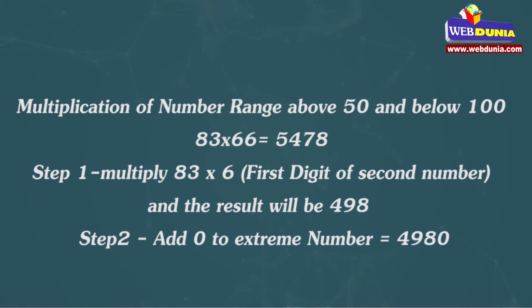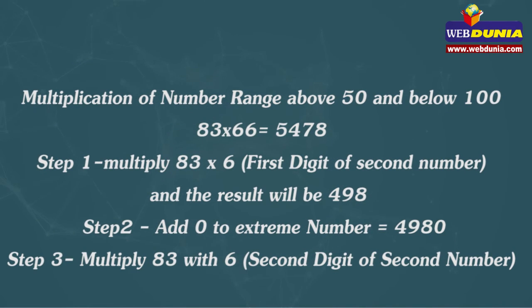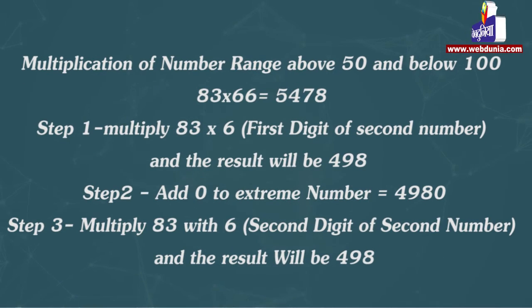Step 2: Add 0 to extreme right equals 4980. Step 3: Multiply 83 with 6, second digit of second number, and the result will be 498.